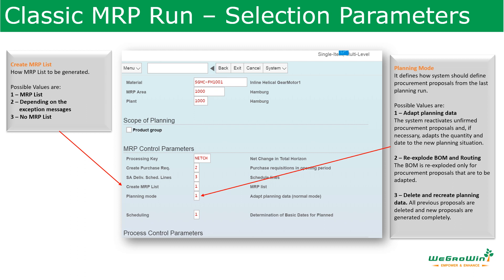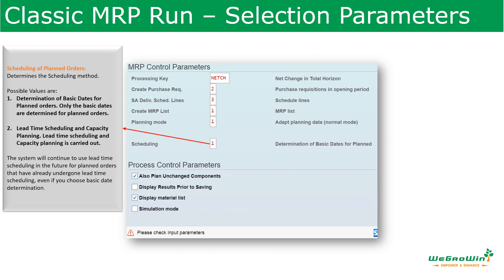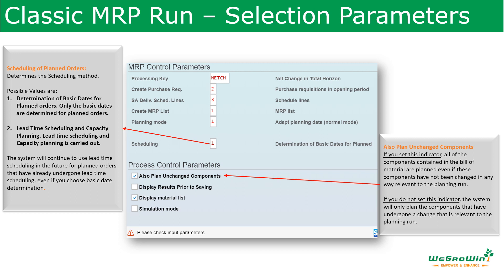Then there is planning mode, which defines whether to adopt the planning data as-is, re-explode the BOM and routing, or delete and recreate planning data. For scheduling planned orders, there are two options: one is to determine the basic date for planned orders based on material master data; the second is lead time scheduling for capacity planning, where the system takes timings from the routing. There is also the 'plan unchanged components' indicator — if set, all components in the bill of material are planned even if not changed; if not set, only components that have undergone changes are planned.